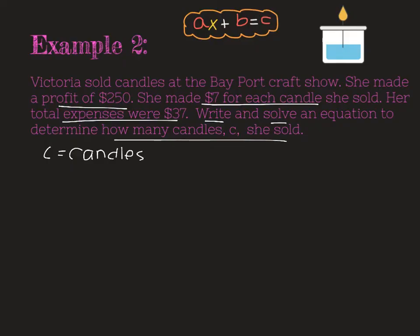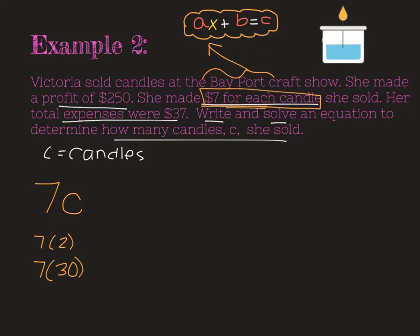Okay, when I'm looking at this, I see that it says she made $7 for each candle. Those words there, that for each is a hint that that's going to be the multiplication piece of my equation, right? So $7 for each candle. If she had sold two candles, it would be seven times two. If she sold 30 candles, it would be seven times 30. But we don't actually know how many candles she sold. So we leave that as our variable. That's our C.